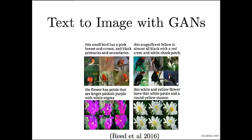On whether the text-to-image GAN uses a code as well as the sentence input: you could probably get away with omitting the code, but in most applications people have both the conditional input and the code so there can be variety in how the conditional input is transformed to an output. That way you can actually learn a whole conditional distribution and get many different results for the same input instead of just one.